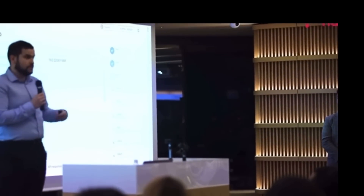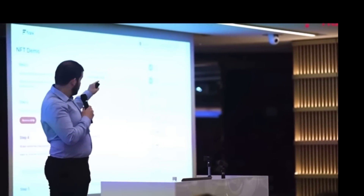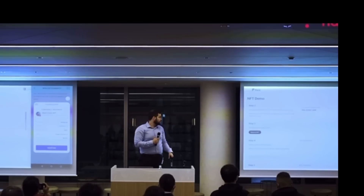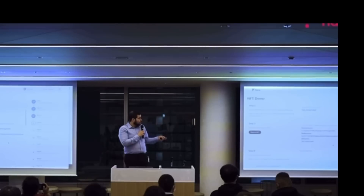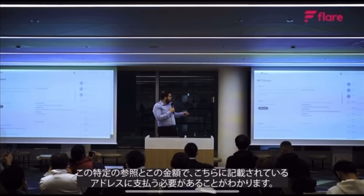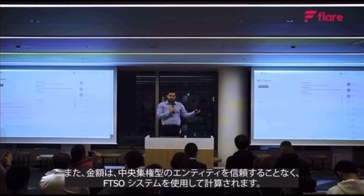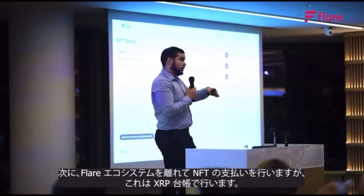Clicking the Reserve NFT button sends a reservation transaction on FLR — we reserve an NFT. This is performed on FLR and signed with Bifrost. We sign the transaction and we're minting it on XRP Ledger, which is just a normal EVM transaction. Once confirmed, the user immediately receives information about the transaction on the external chain that needs to be paid — the address, specific reference, and amount — calculated using the FTSO system without trusting any centralized entity. Then we leave the FLR ecosystem and make the payment on the XRP Ledger.